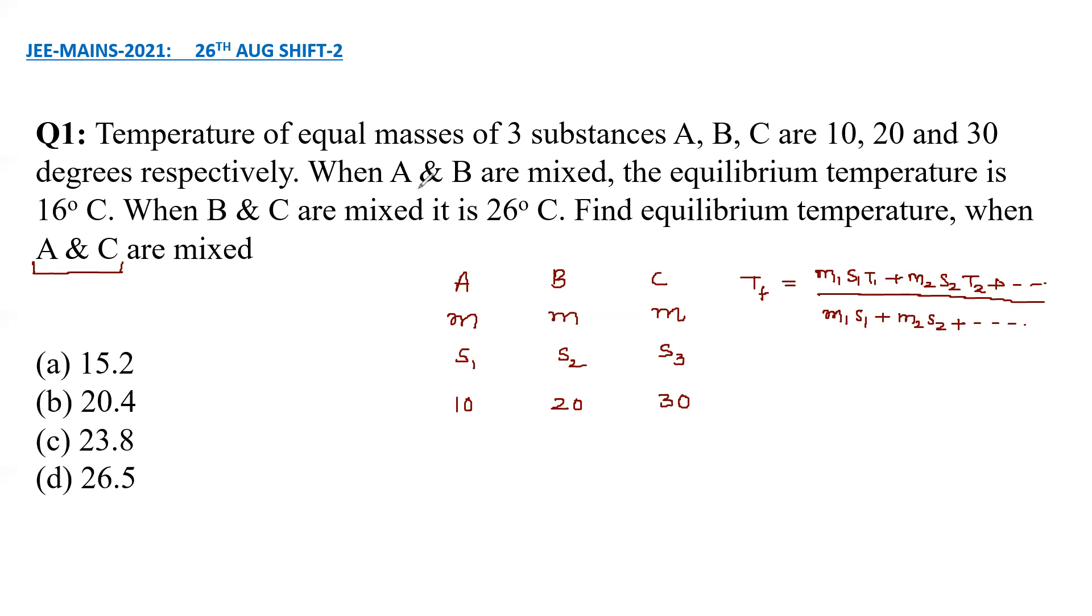As per the given data for A and B, when they are mixed the final temperature is 16. So 16 is equal to M times S1 into 10 plus S2 into 20 divided by M times S1 plus S2.